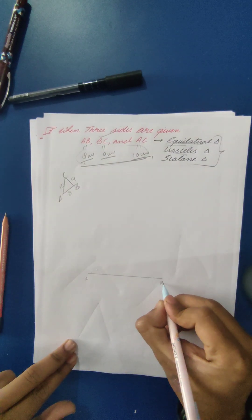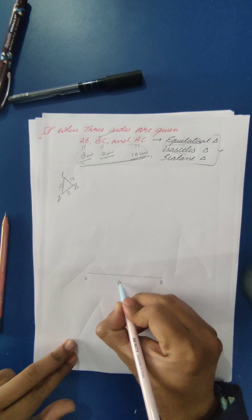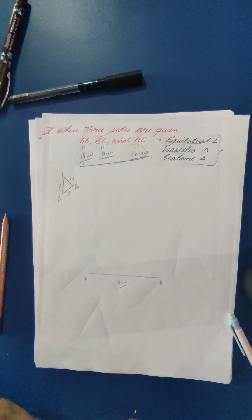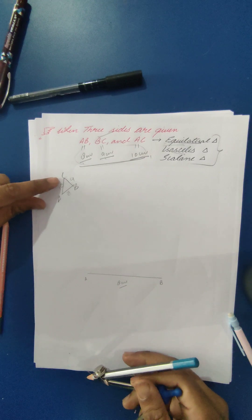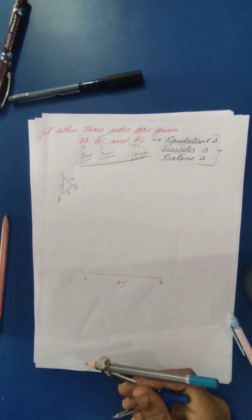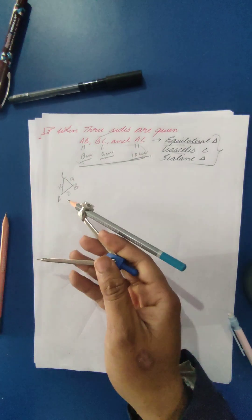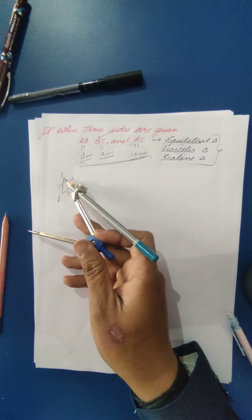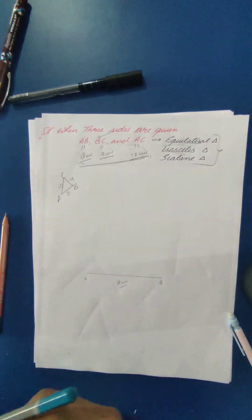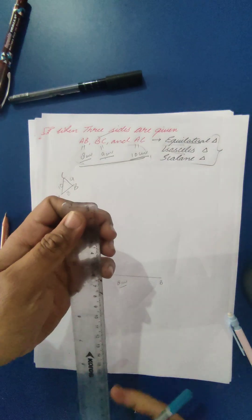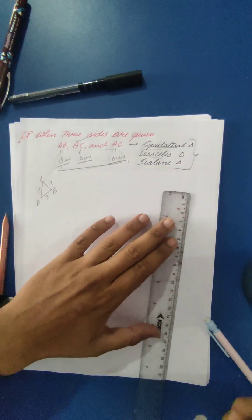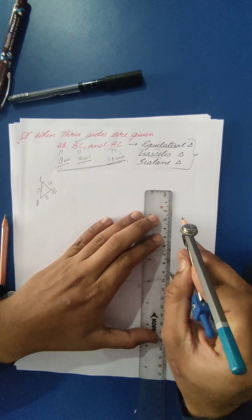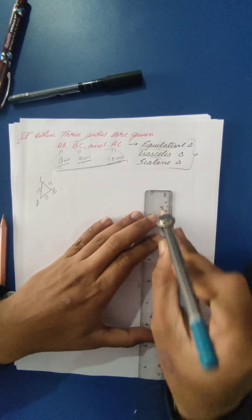Mark the line segment AB as eight centimeters. Now to get vertex C, both BC and AC meet at C. To find vertex C, take an arc of nine centimeters from vertex B and an arc of ten centimeters from vertex A. First, measure nine centimeters on the compass because BC is given as nine centimeters.